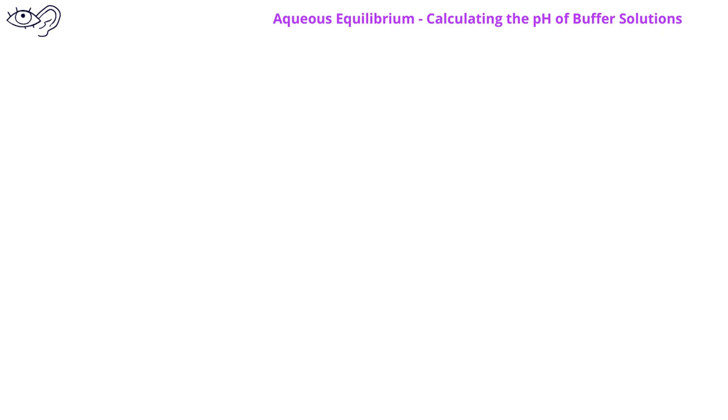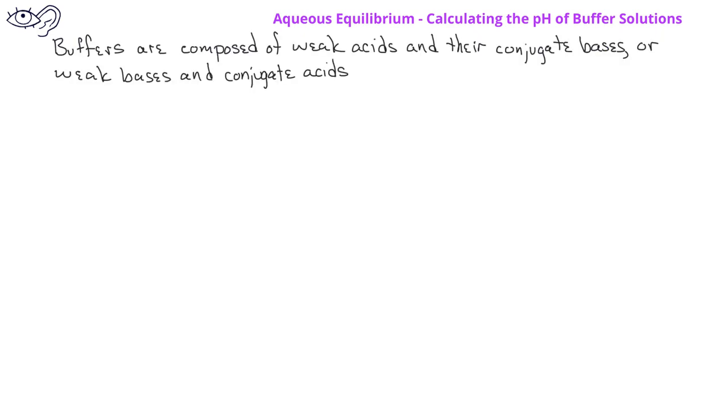In a previous video, we saw that buffer solutions are composed of a weak acid and its conjugate base, or a weak base and its conjugate acid. As a result, buffer solutions follow the common ion effect.